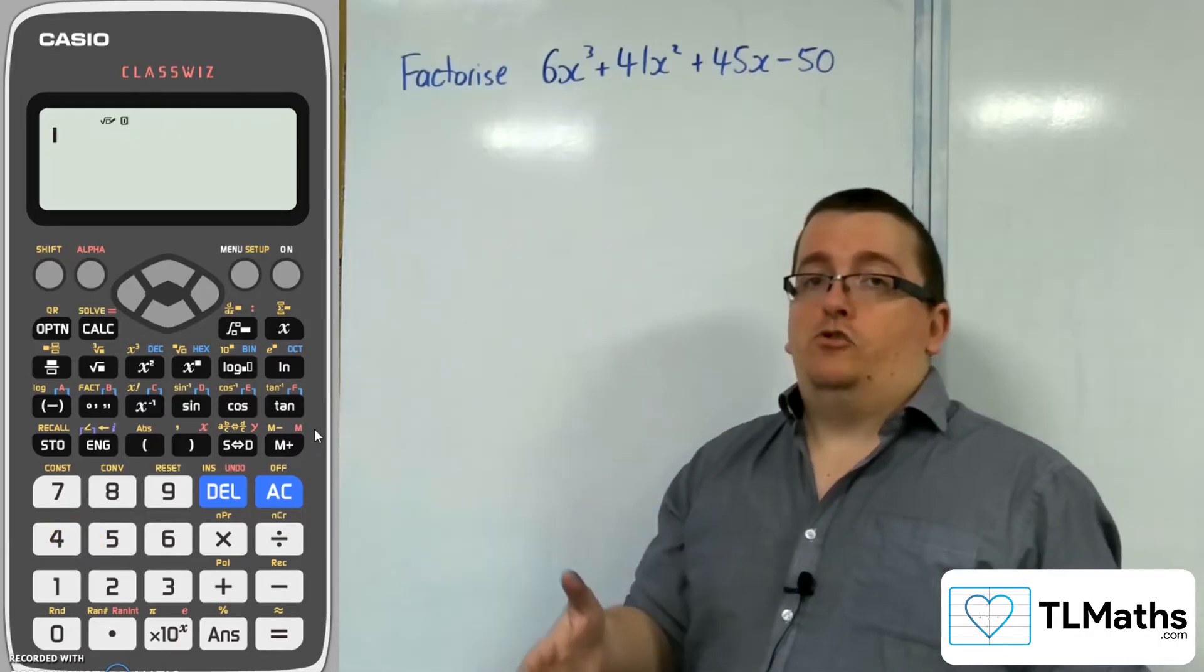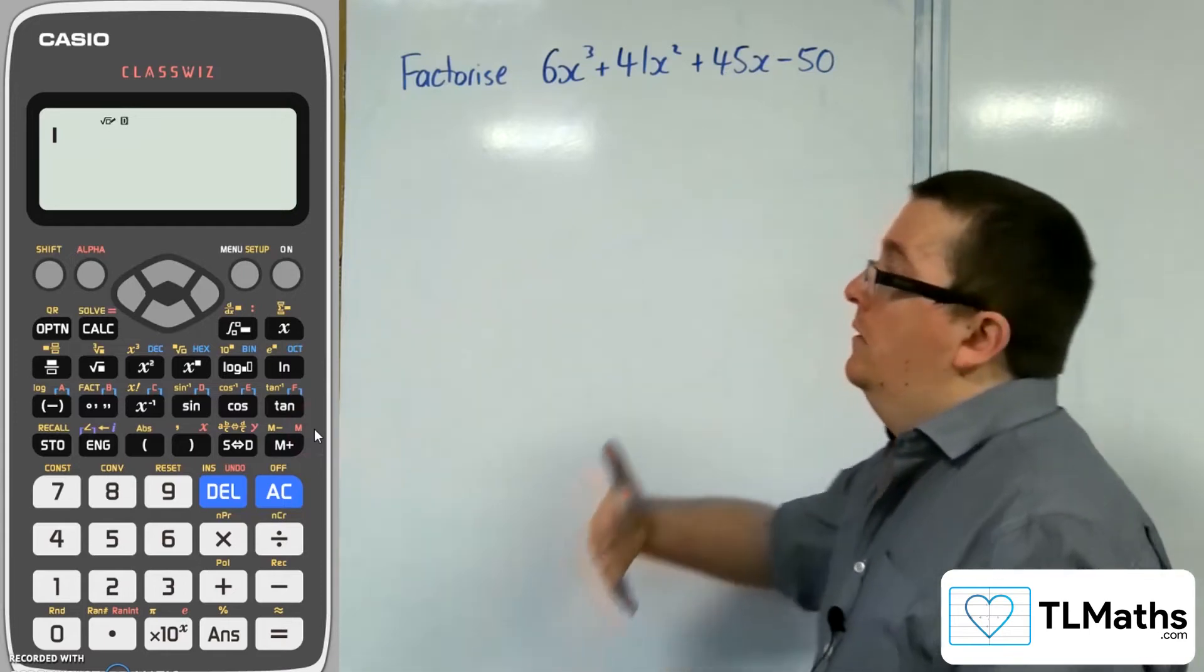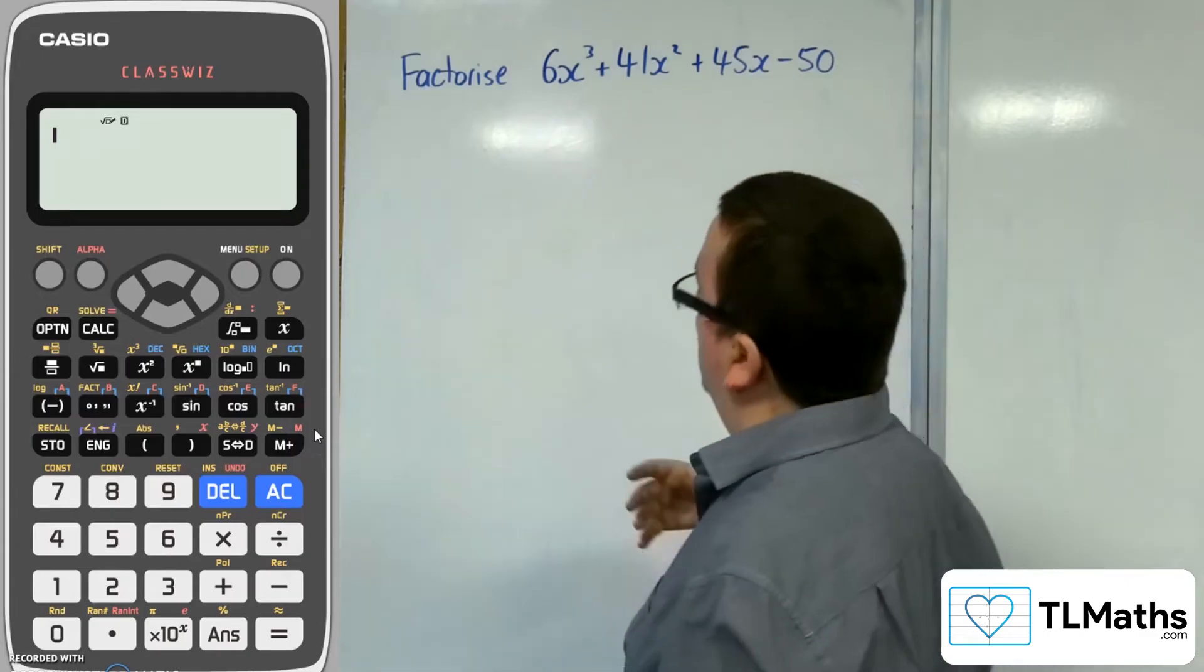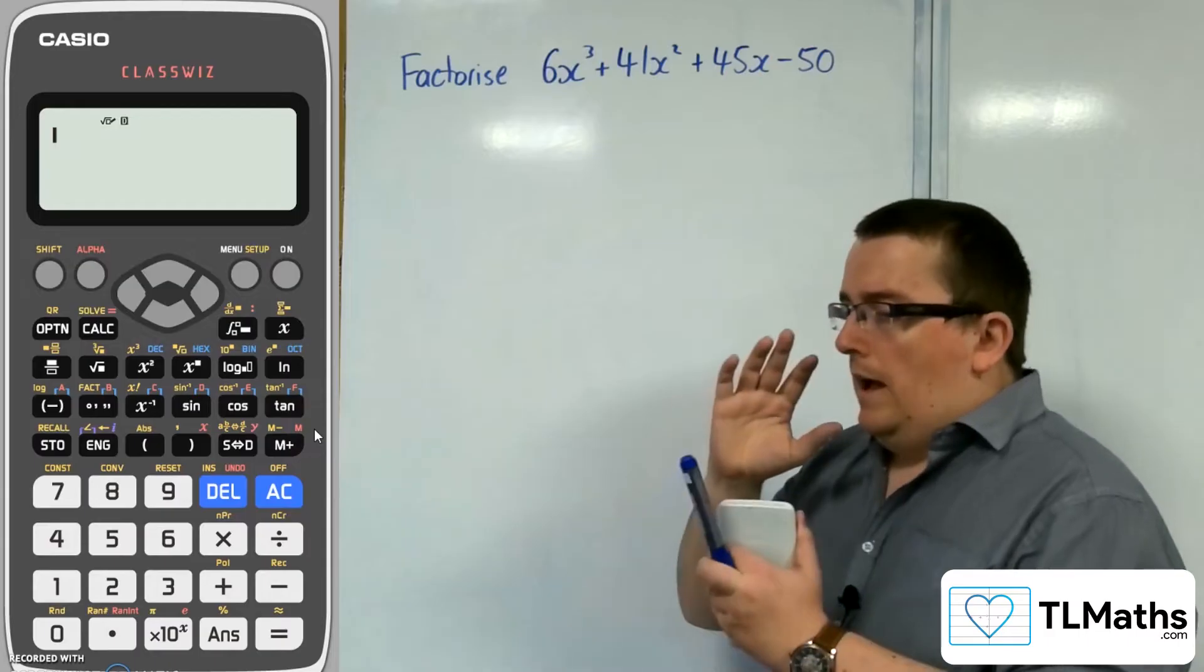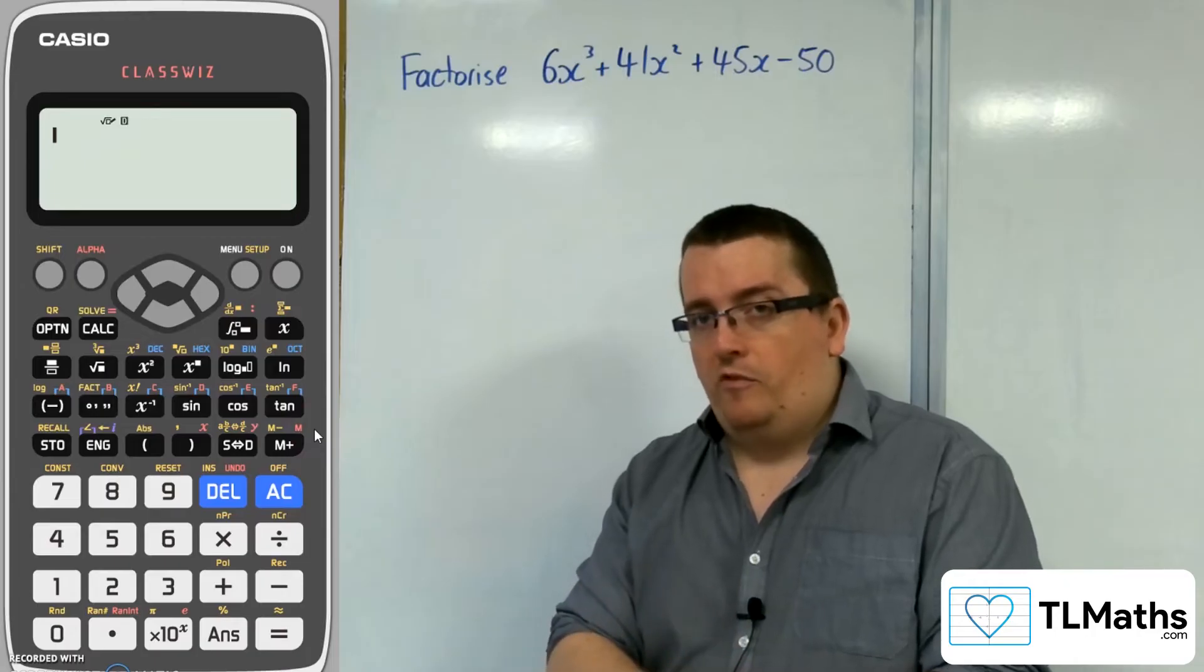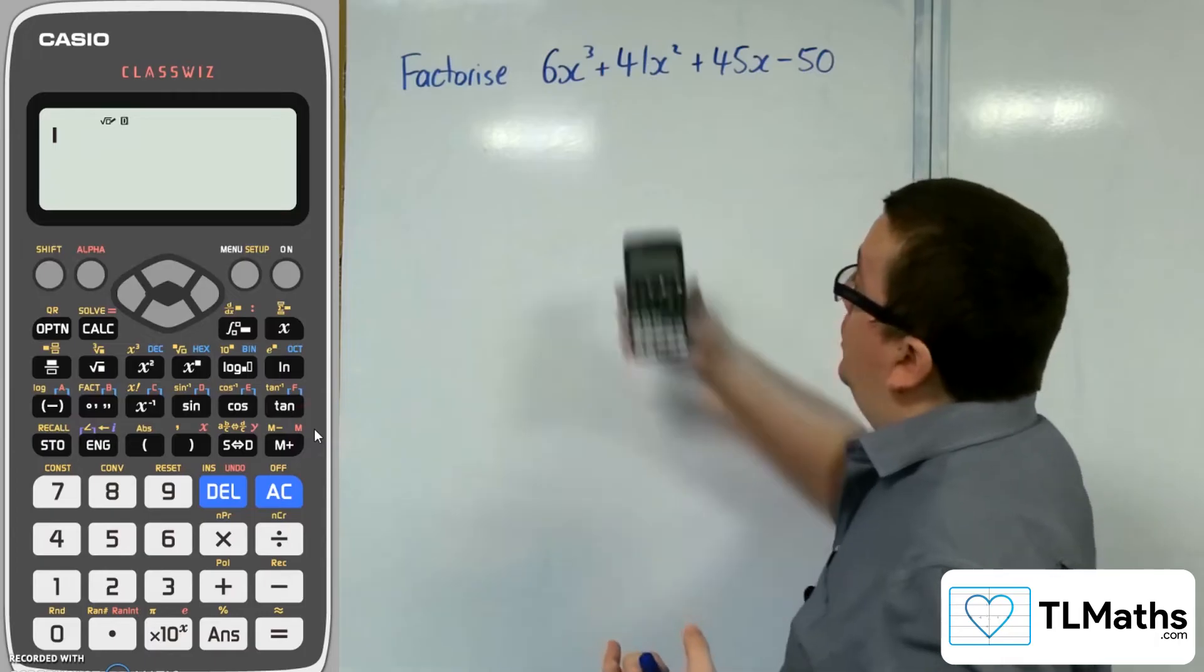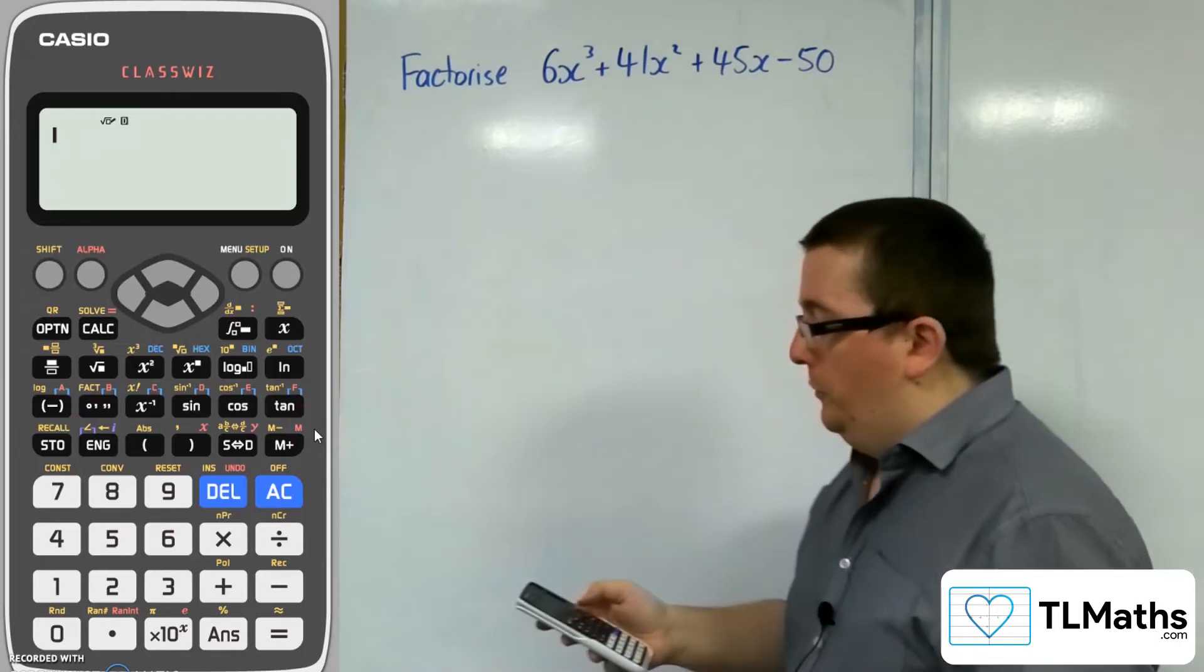For number 4, how to factorise a quadratic, cubic, quartic. Let's say I wanted to factorise this horrific looking cubic. People can forget that they can factorise with the help of my calculator. What I'm going to do is solve the equation of that cubic equaling 0. I'm going to find the solutions to that.